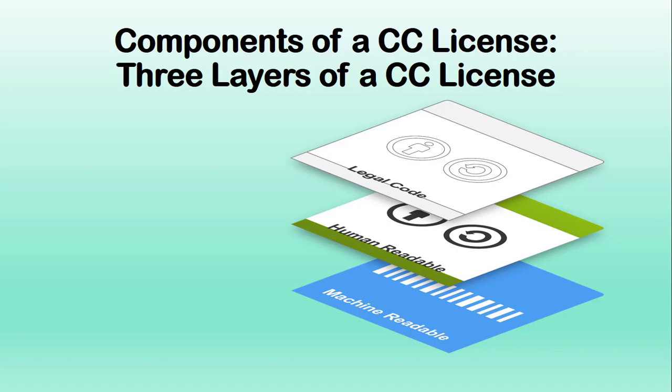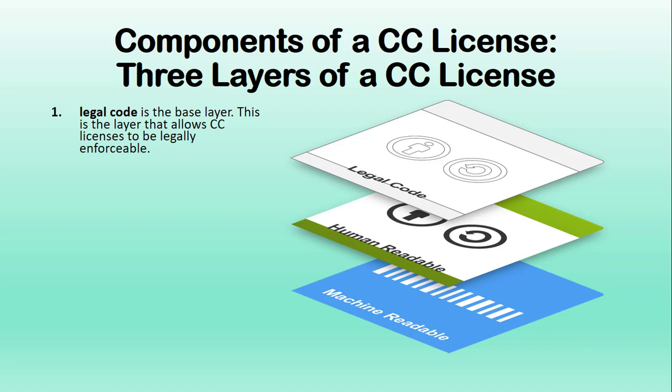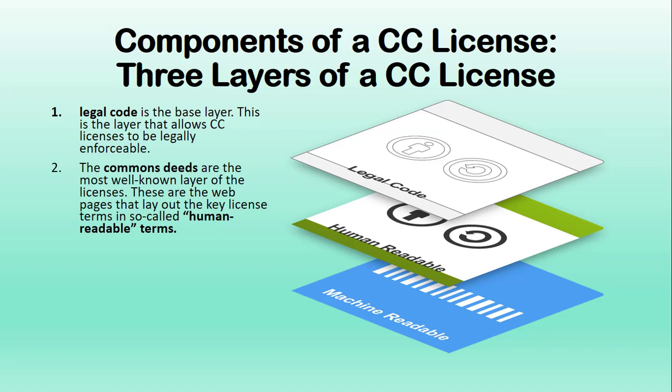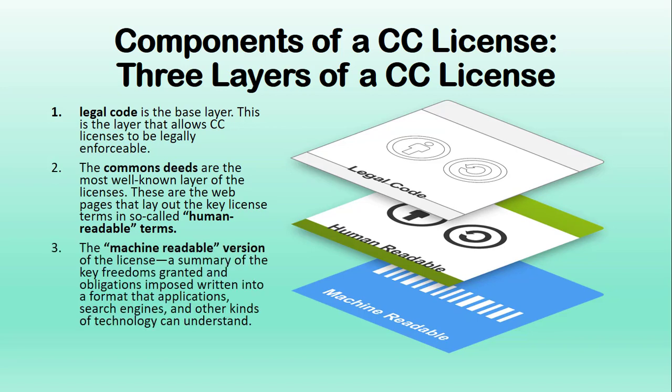There are three layers to a CC license. First, the legal code is the base layer — this is the layer that allows CC licenses to be legally enforceable. The Commons deeds are the most well-known layer of the licenses; these are the web pages that lay out the key license terms in so-called human-readable terms. And finally, the machine-readable version of the license is a summary of key freedoms granted and obligations imposed, written in a format that applications, search engines, and other kinds of technology can understand.